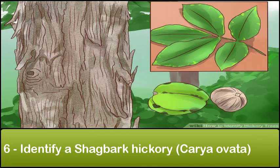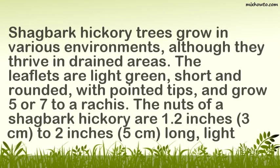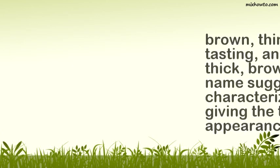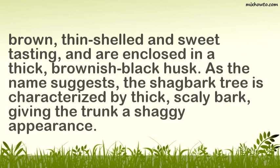Step 6: Identify a Shagbark Hickory (Carya ovata). Shagbark hickory trees grow in various environments, although they thrive in drained areas. The leaflets are light green, short and rounded with pointed tips, and grow 5 or 7 to a rachis. The nuts of a shagbark hickory are 1.2 inches (3 cm) to 2 inches (5 cm) long, light brown, thin-shelled and sweet-tasting, and are enclosed in a thick, brownish-black husk. As the name suggests, the shagbark tree is characterized by thick, scaly bark, giving the trunk a shaggy appearance.